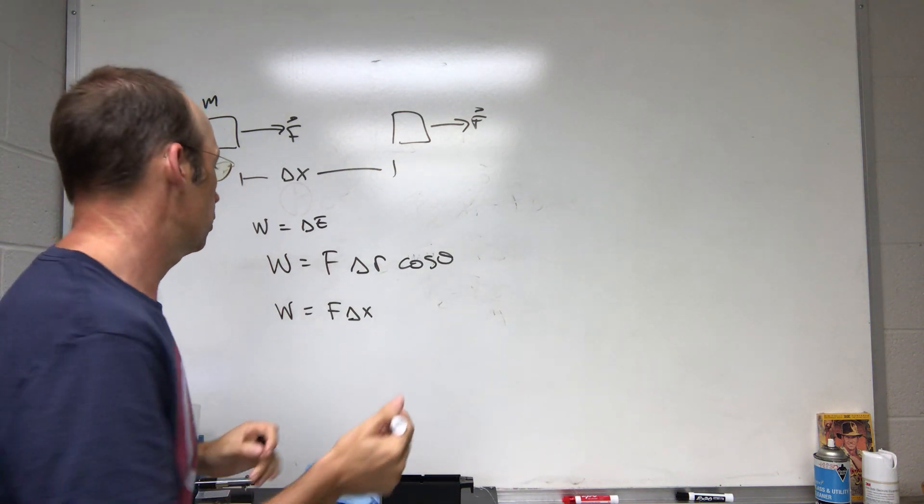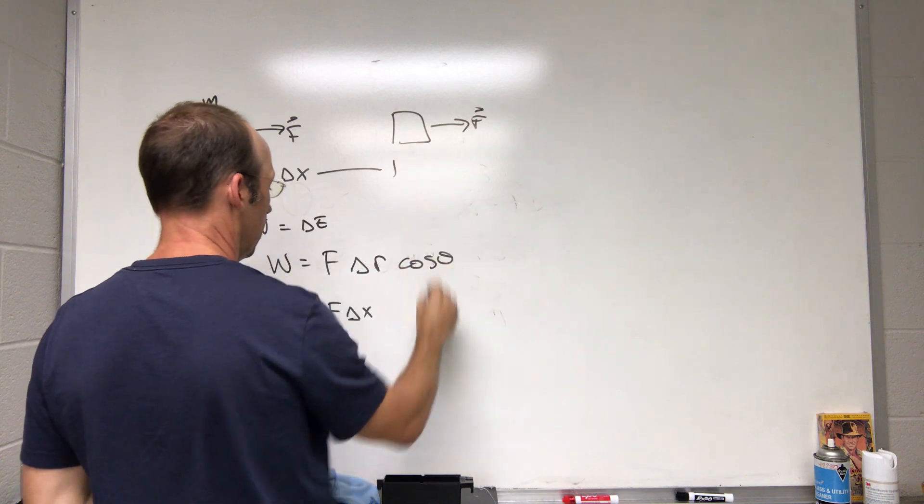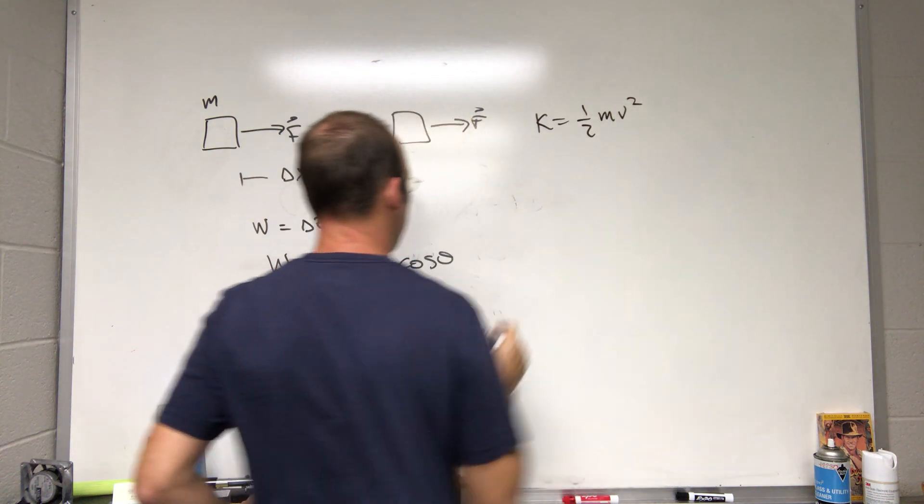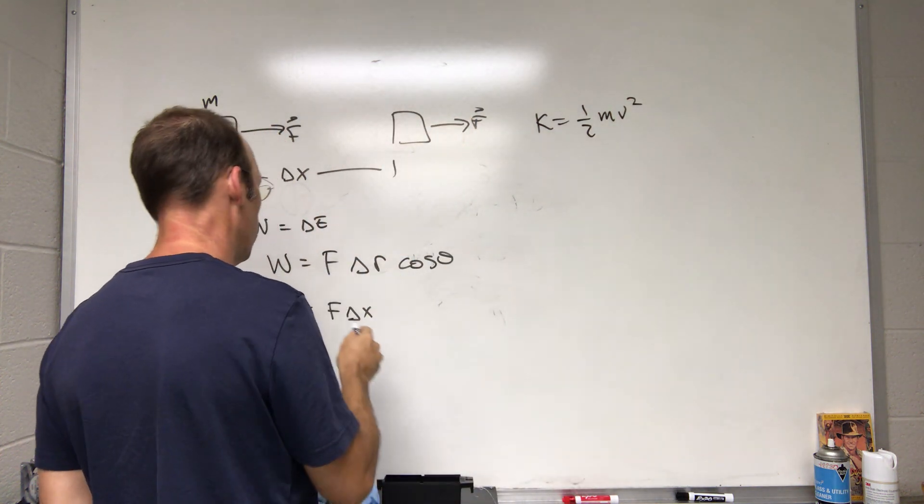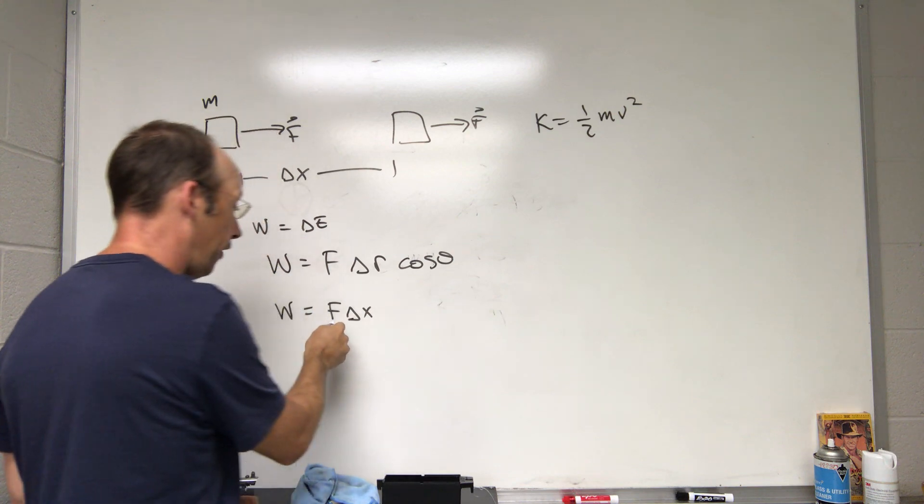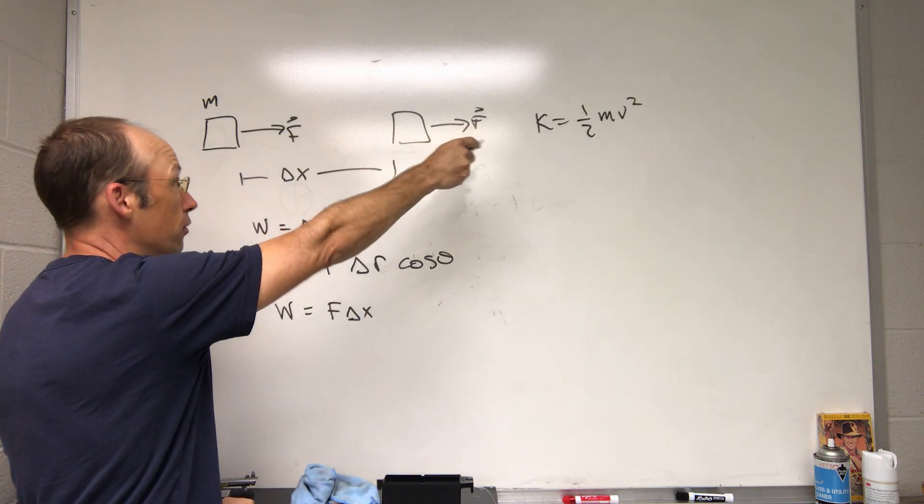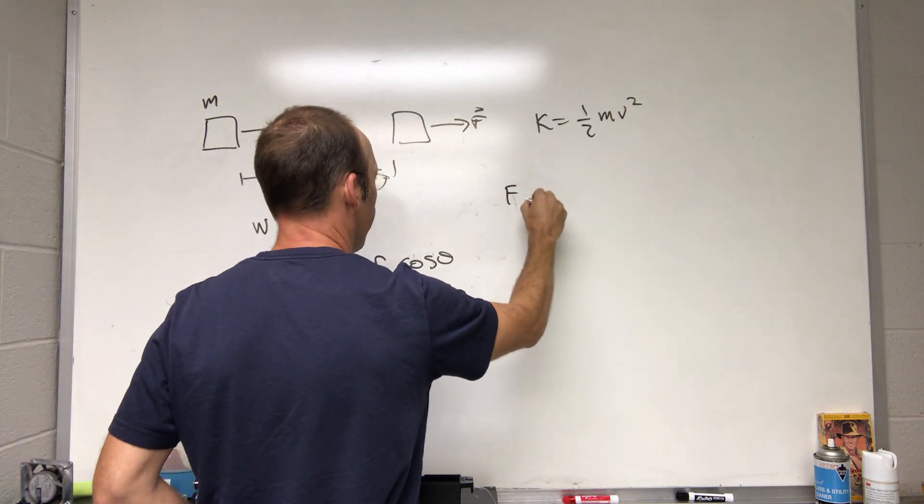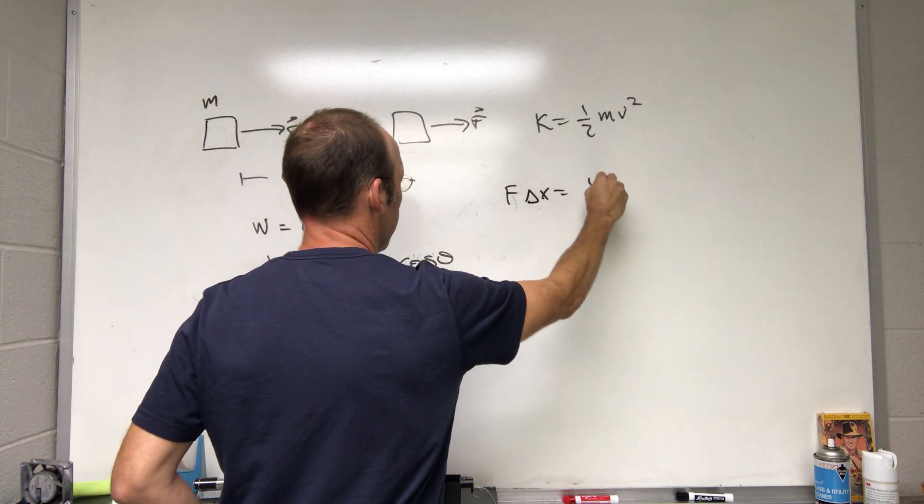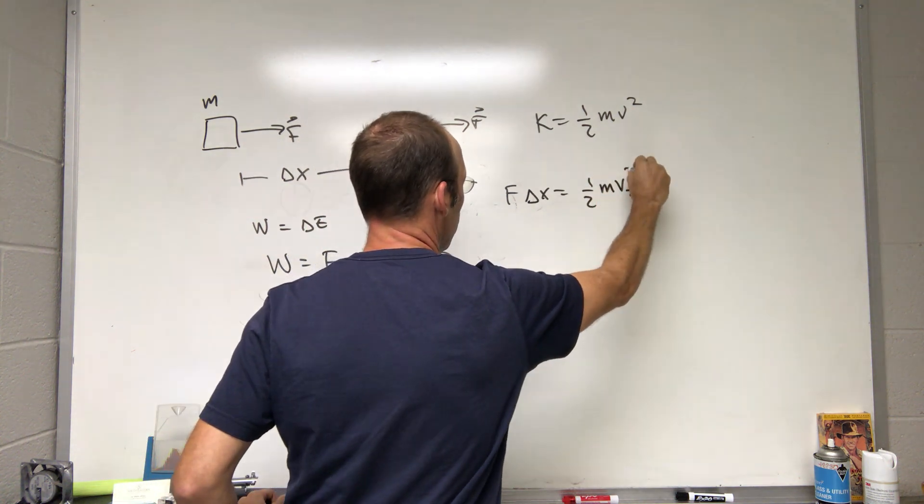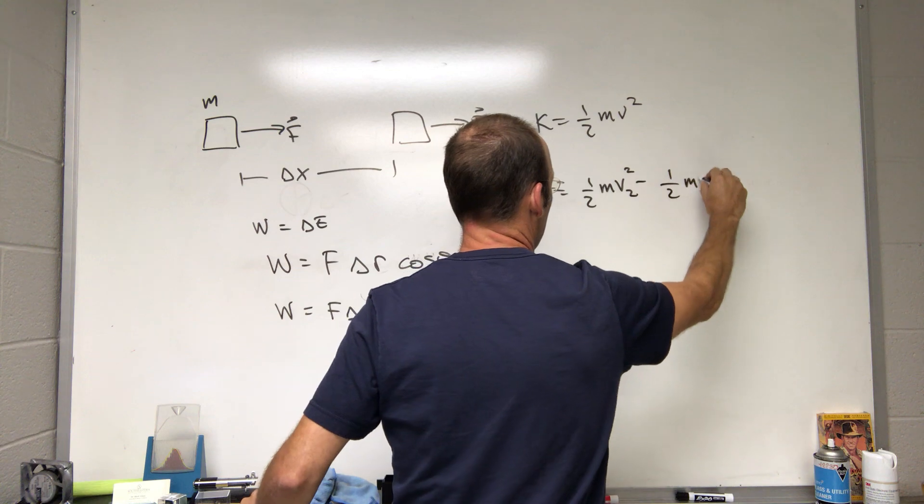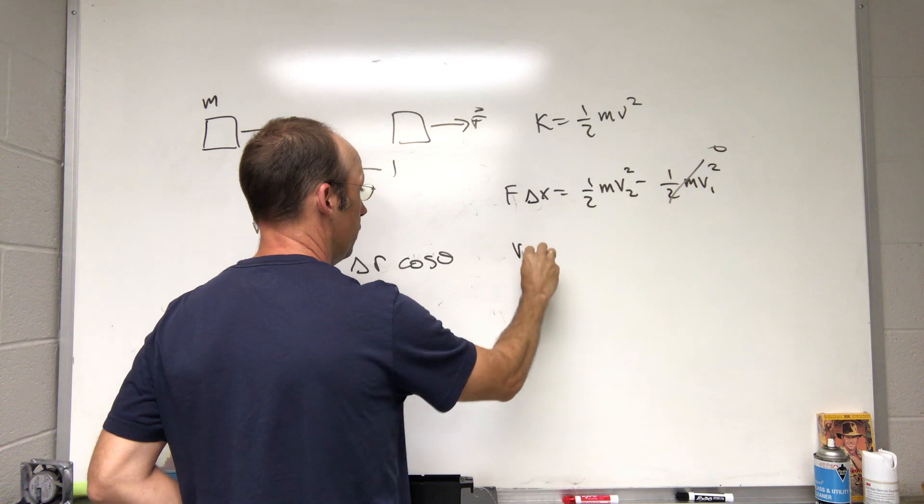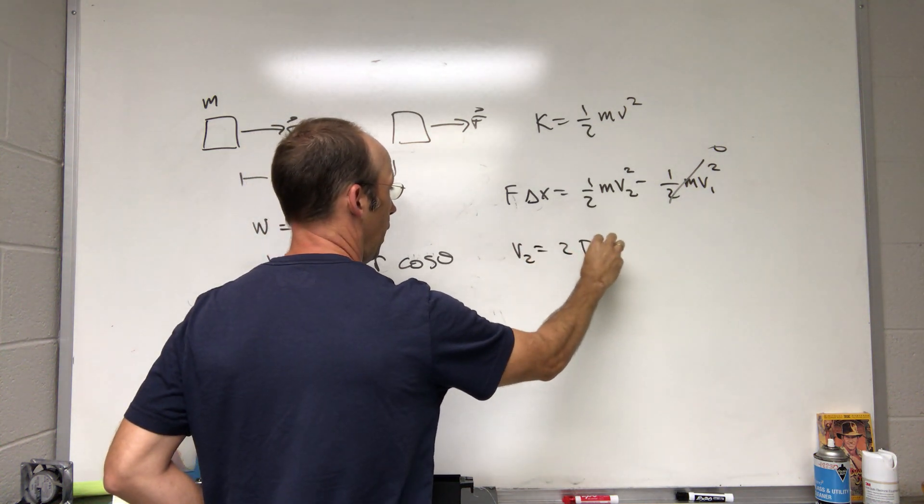Now what is energy? If I have a system like a block, I could just say it has kinetic energy. So if K is one half mv squared, then this F Delta x does work and increases the kinetic energy. If it starts from rest it has no kinetic energy, so F Delta x equals one half mv2 squared minus one half mv1 squared. But that's zero, so v2 equals square root of 2 F Delta x over m.